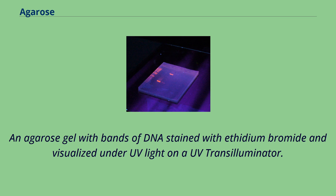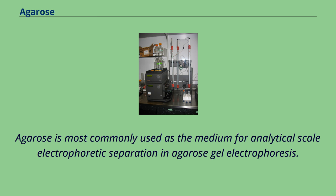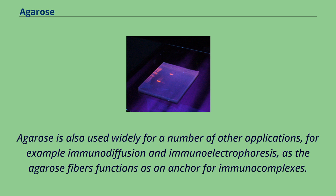An agarose gel with bands of DNA stained with ethidium bromide and visualized under UV light on a UV transilluminator. Agarose is a preferred matrix for work with proteins and nucleic acids as it has a broad range of physical, chemical and thermal stability, and its lower degree of chemical complexity also makes it less likely to interact with biomolecules. Agarose is most commonly used as the medium for analytical scale electrophoretic separation. Gels made from purified agarose have a relatively large pore size, making them useful for separation of large molecules such as proteins and protein complexes over 200 kilodaltons, as well as DNA fragments over 100 base pairs. Agarose is also used for immunodiffusion and immunoelectrophoresis, as the agarose fibers function as an anchor for immunocomplexes.